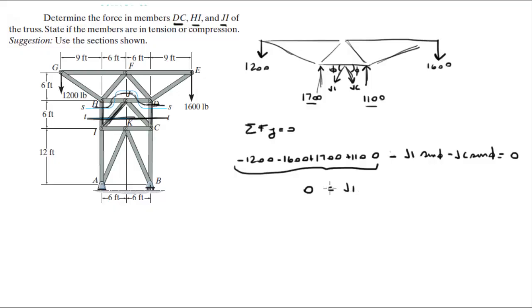JI - sorry, minus JI sine of phi minus JC sine of phi is equal to zero, so you know that these two are equal to zero.